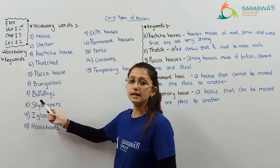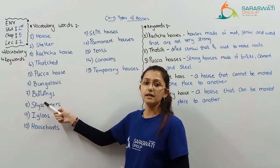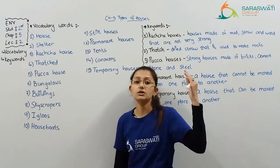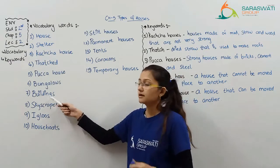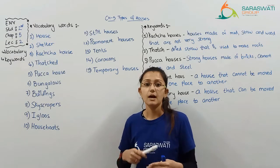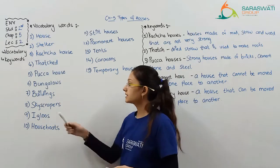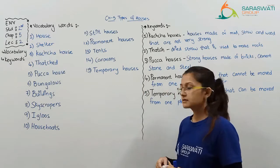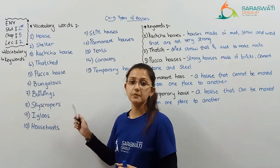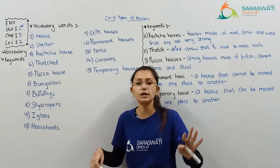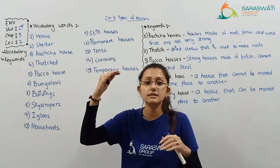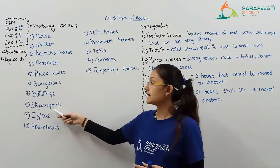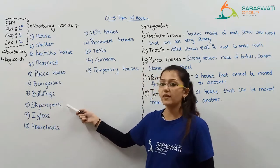Seventh: buildings. B-U-I-L-D-I-N-G-S. Building means a tall structure — like the buildings we can see nearby our houses, for example our school building. Eighth: skyscrapers. S-K-Y-S-C-R-A-P-E-R-S. Skyscrapers are buildings which are too long and tall — almost touching the sky. They can have 12 floors, 24 floors. Those buildings are known as skyscrapers.